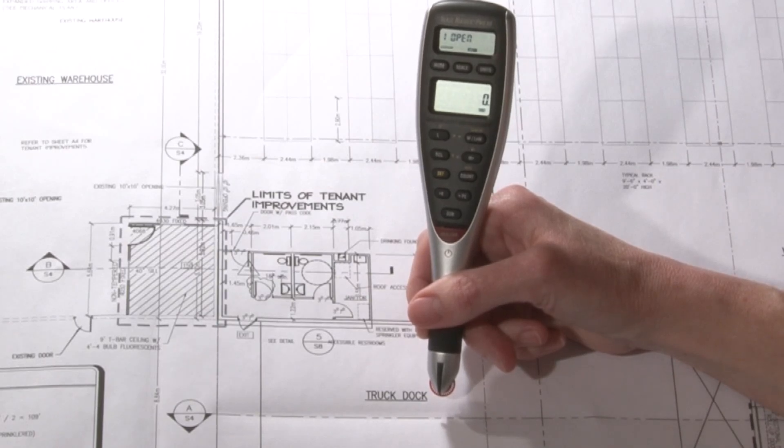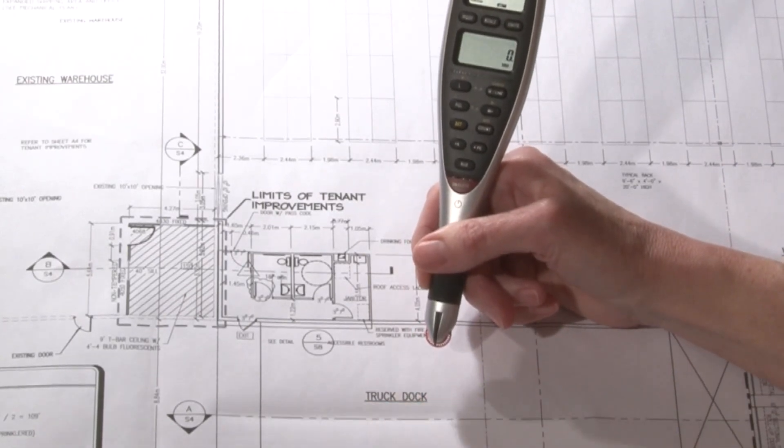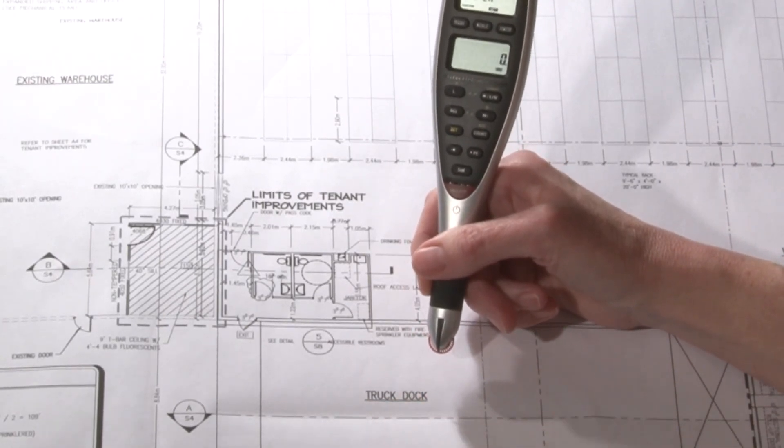First, I'm going to look at my plan and find the longest known dimension. Let's use this truck dock length of 26.2 meters.